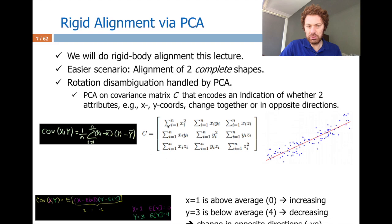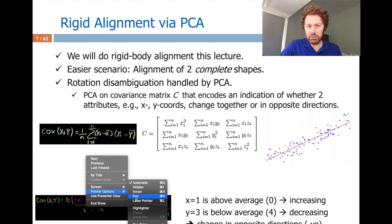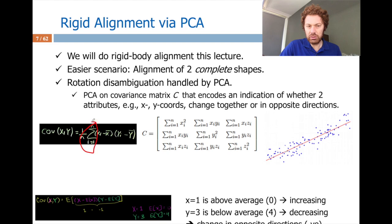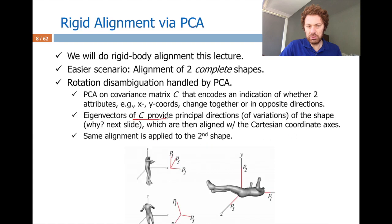Why does this compute an indication of whether two attributes scale together? Consider the point (1, 3): mean x is 0 and mean y is 4. For this sample, x is above average so it tends to grow, and y is below 4 so it tends to decrease. When x is increasing, y is decreasing — so there is a negative covariance. You do this for all samples, which is why the summation kicks in. You compute the covariance matrix with that logic, and the eigenvectors of this matrix give the principal directions of variations.